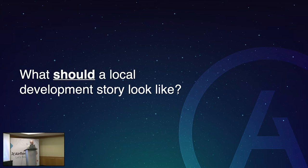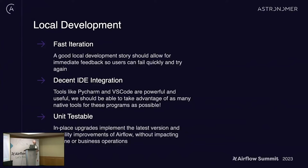What should a local development story look like? You want fast iteration. You want to fail fast — you want to know immediately if something is wrong with what you're writing in your DAG. You want decent IDE integration; we should all be able to use IDE debuggers, set breakpoints, and play with data live. And it should be unit testable so you can test your assumptions and know when something you've written has broken one of those assumptions.